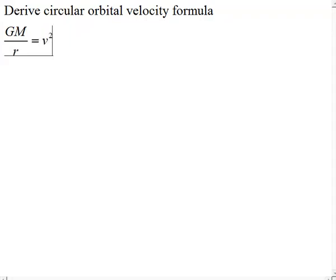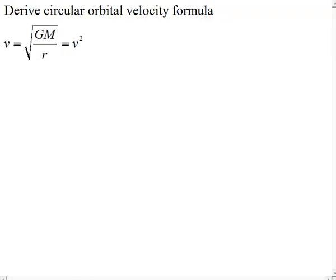So we have v squared equals GM over r, or v equals the square root of GM over r.